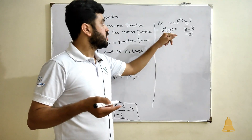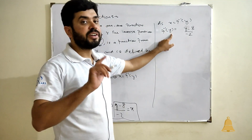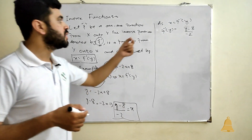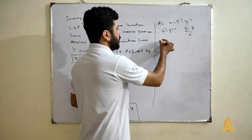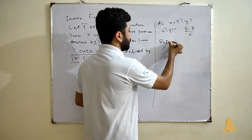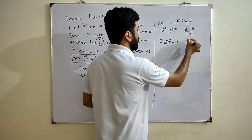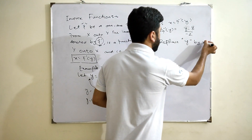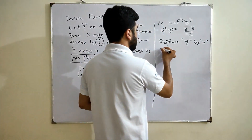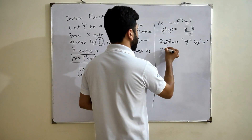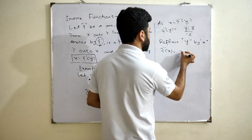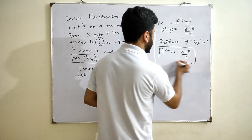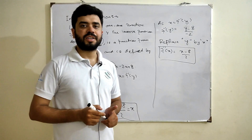Now I have it written in the form of f inverse of y. The last step is to replace y with x to express the function in terms of x. So the inverse function is f inverse of x equals x minus 8 divided by 2. That's it, thank you.